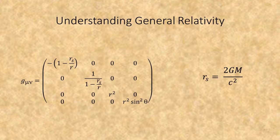This is the metric tensor for a gravitational field. It is known as the Schwarzschild metric. And rs is the Schwarzschild radius, which is the radius of the event horizon of a black hole.